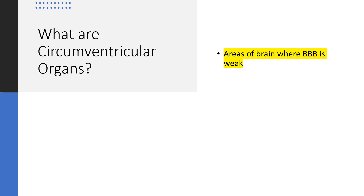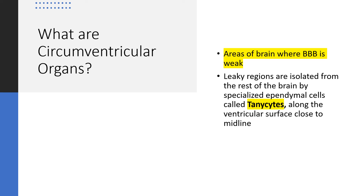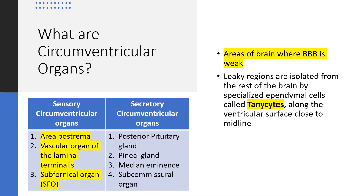Circumventricular organs are areas of the brain where the blood-brain barrier is weak. These leaky regions are isolated from the rest of the brain by specialized ependymal cells called tanycytes along the ventricular surface close to the midline. They are classified into sensory and secretory types. Sensory circumventricular organs — important for exams — include the area postrema, vascular organ of the lamina terminalis, and subfornical organ. Secretory circumventricular organs include the posterior pituitary gland, pineal gland, median eminence, and subcommissural organ.